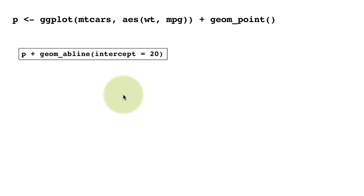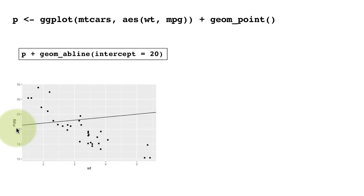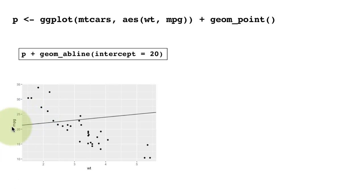Here we show another example — geom_abline with intercept equals 20. The default intercept is 0, but changing it to 20 shifts the line up. The slope is still 1 because we haven't specified it and the default is 1. The line will intersect the y-axis at 20 — it seems to intercept a little above 20 only because the x-axis is not starting at 0, but extending it down would confirm the y-intercept at 20.